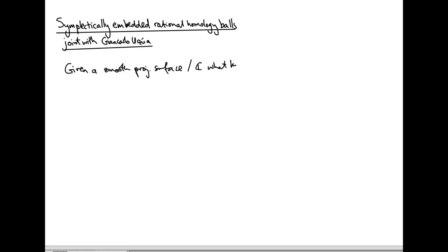The motivation comes from algebraic geometry. Here's a difficult question: given a smooth projective surface over ℂ, call it X, what kinds of singularity can develop as X varies in its moduli space?